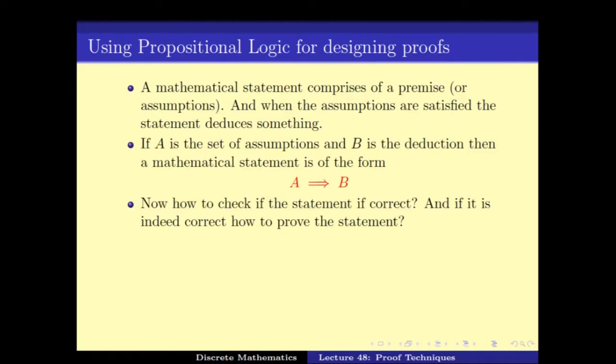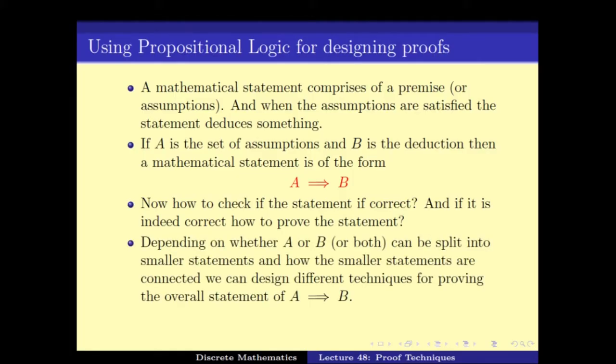And there are various ways of approaching the proofs and we have seen quite a number of techniques. A statement is always of the form A implies B. There are various ways of proving this A implies B, depending on the structure of A and structure of B. For example, if A can be split into and of some numbers or B can be split into or of some numbers and so on and so forth. We might use some different proof techniques which are all governed using this propositional logic statement.